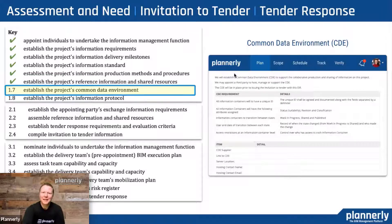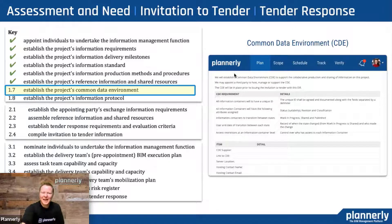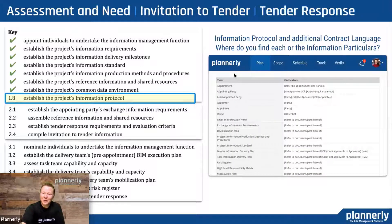The last two in the assessment and need section cover understanding where we're going to put things and how they'll be managed — is it one common data environment or a network of them? What are we going to use to communicate and share information? It's really important to establish that upfront. The Plannerly platform has been described as the BIM execution planning CDE. There's a misconception that a CDE is just one single place, but we need to manage all those different places and all that information. Then there are information protocols — understanding the contractual side, the information particulars, and pushing those terms and conditions through each of the appointments later on.